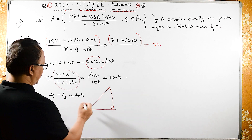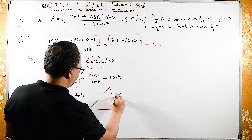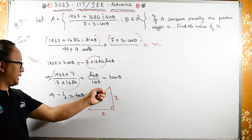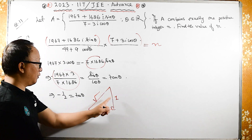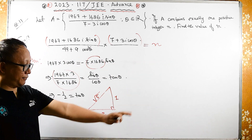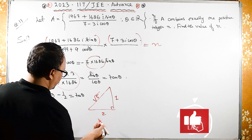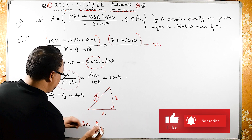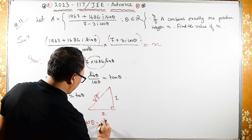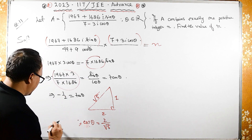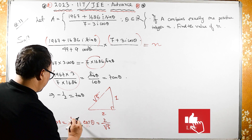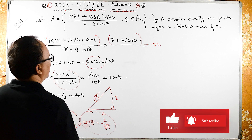Let us draw a right triangle. Forgetting about the minus sign for now, tan theta equals one half, so the opposite side is 1, adjacent side is 2, and the hypotenuse is square root of 4 plus 1, which is root 5. So cos theta equals 2 upon root 5 and sin theta equals 1 upon root 5.